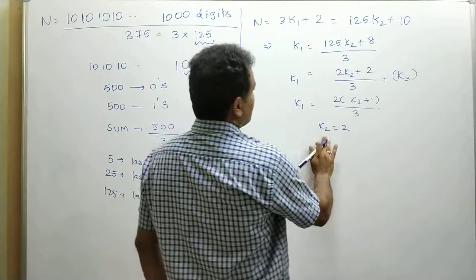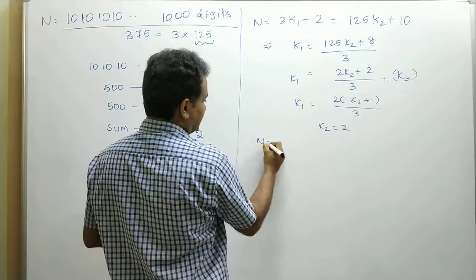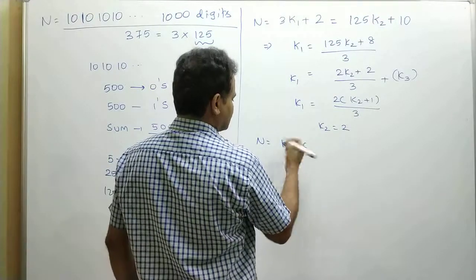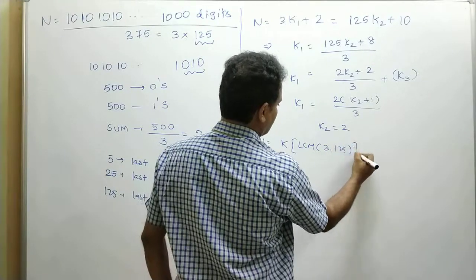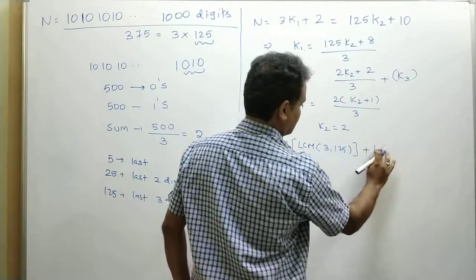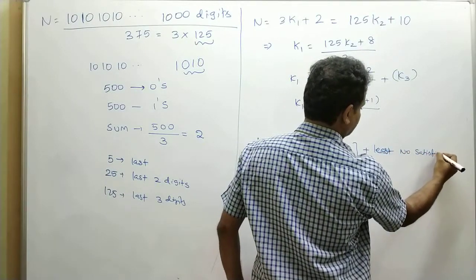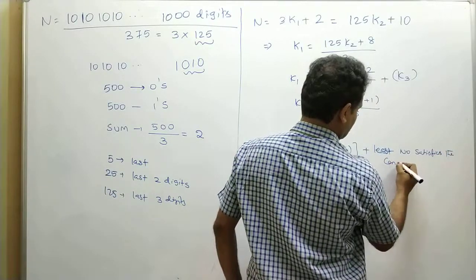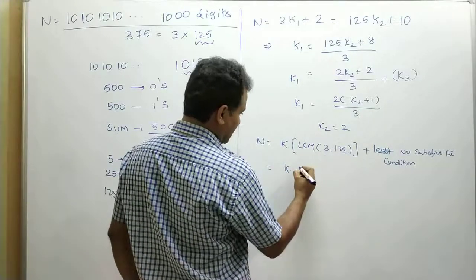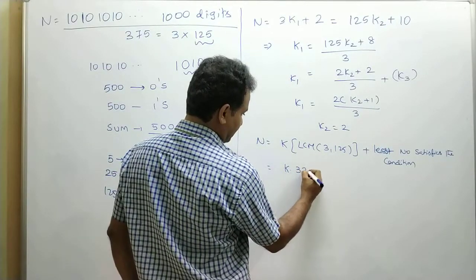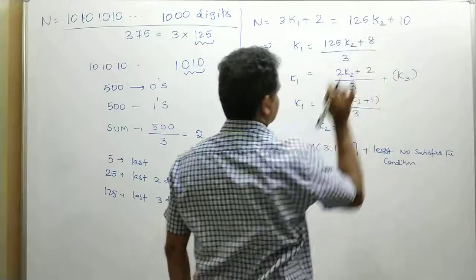So if you substitute k₂ equal to 2 in the given expression, you will get the remainder. n is in the format of k times LCM of 3 and 125, which is 375, plus the least number that satisfies the condition. The least number satisfies the condition when you substitute k₂ equal to 2 in this given expression.